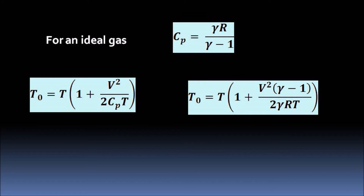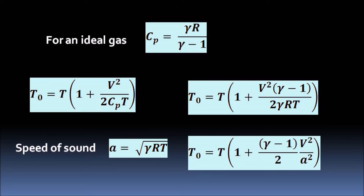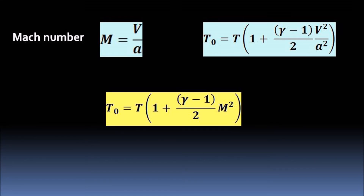We also use the expression for the speed of sound, a = √(γRT), to get the expression for total temperature in terms of the speed of the gas and the speed of sound. Then, making use of the definition of Mach number as the ratio of flow speed to speed of sound, we substitute it into the expression and finally obtain the stagnation temperature in terms of Mach number, ratio of specific heats, and static temperature.